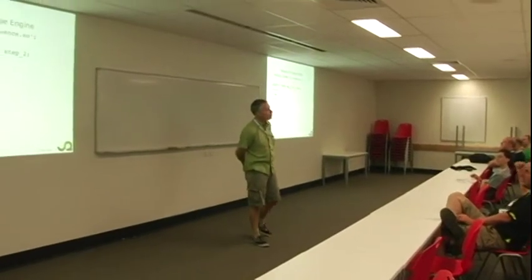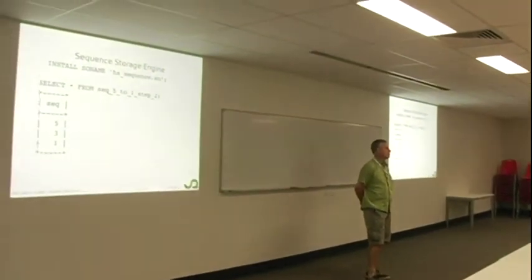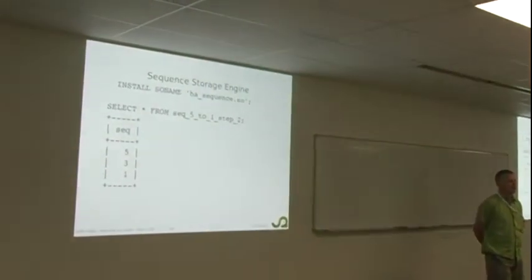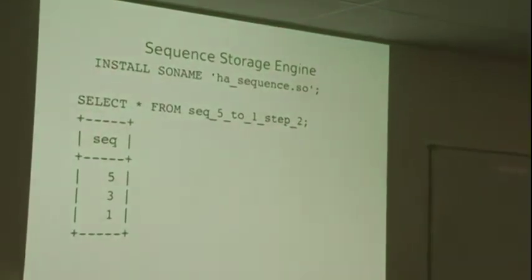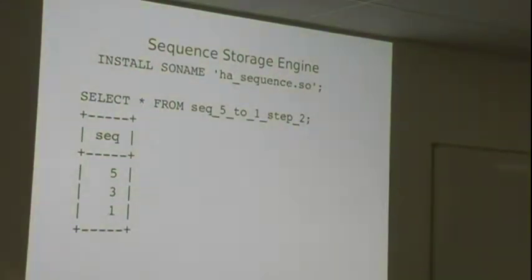So one of the features that MariaDB 10 has got is a thing called the sequence storage engine. Now storage engines in MySQL or in MariaDB, they're sort of the bottom layer of the database manager. Normally a storage engine won't actually store the data on the disk, but this storage engine, the sequence storage engine, just sort of makes it up on the fly as it goes along. If I get a little light button here. Oh, look at that. So if you select from this fancy named table here, seq underscore five to one step two, the storage engine, because you've used that fancy name, MariaDB says, right, we're using a sequence storage engine. And the sequence storage engine just gives back those numbers as you'd expect.